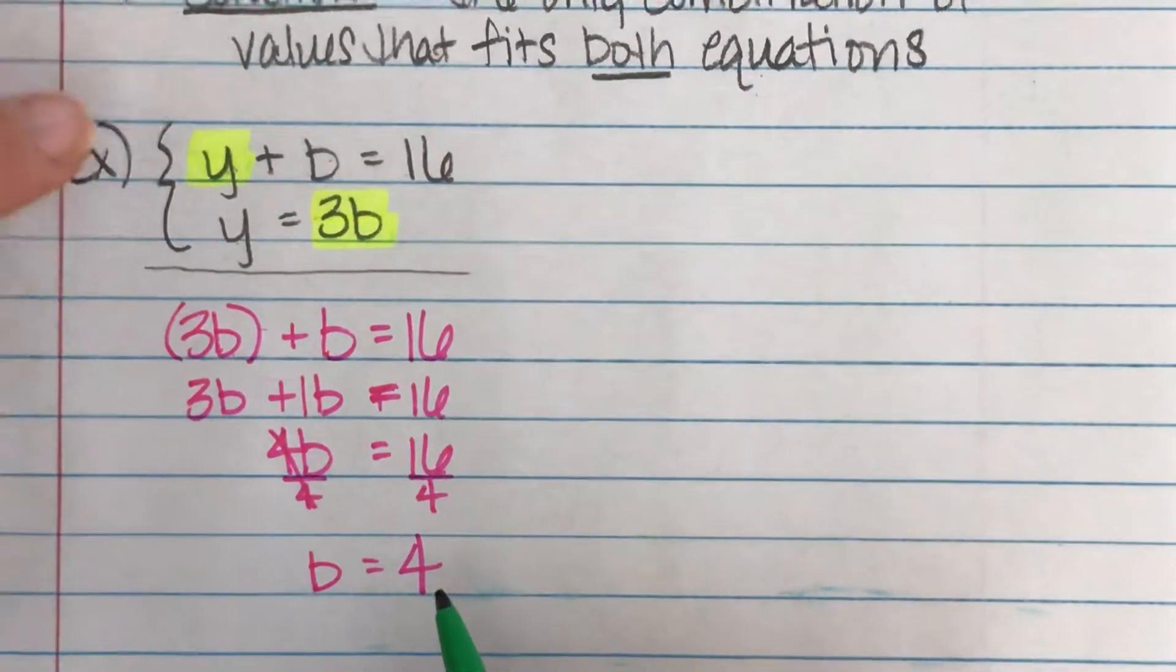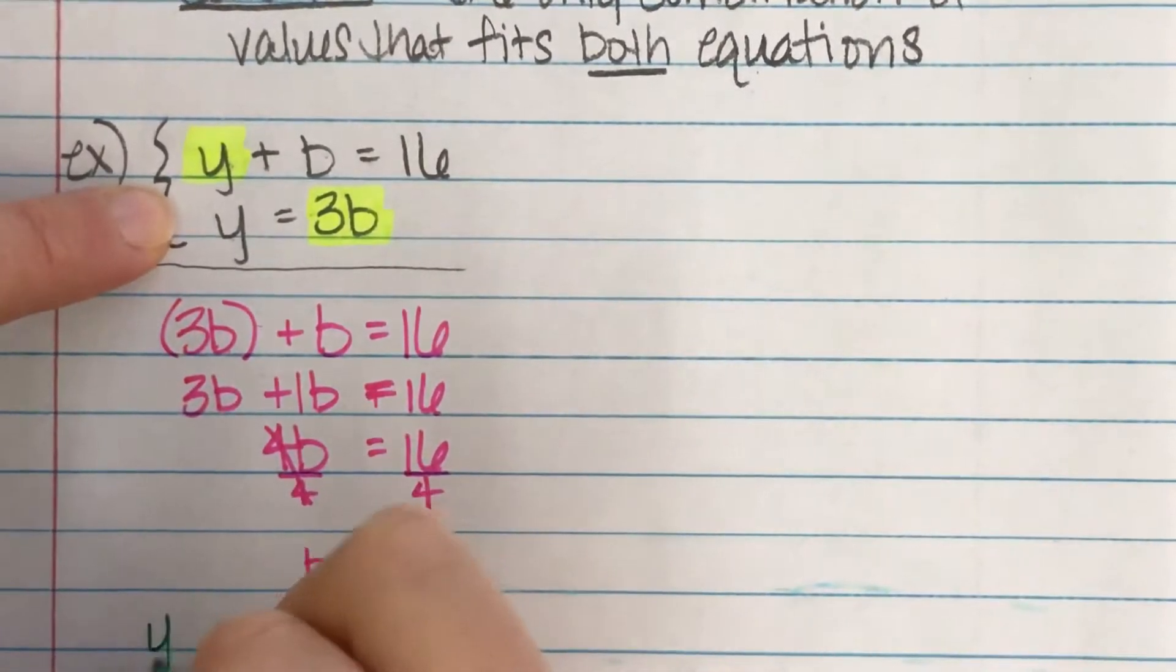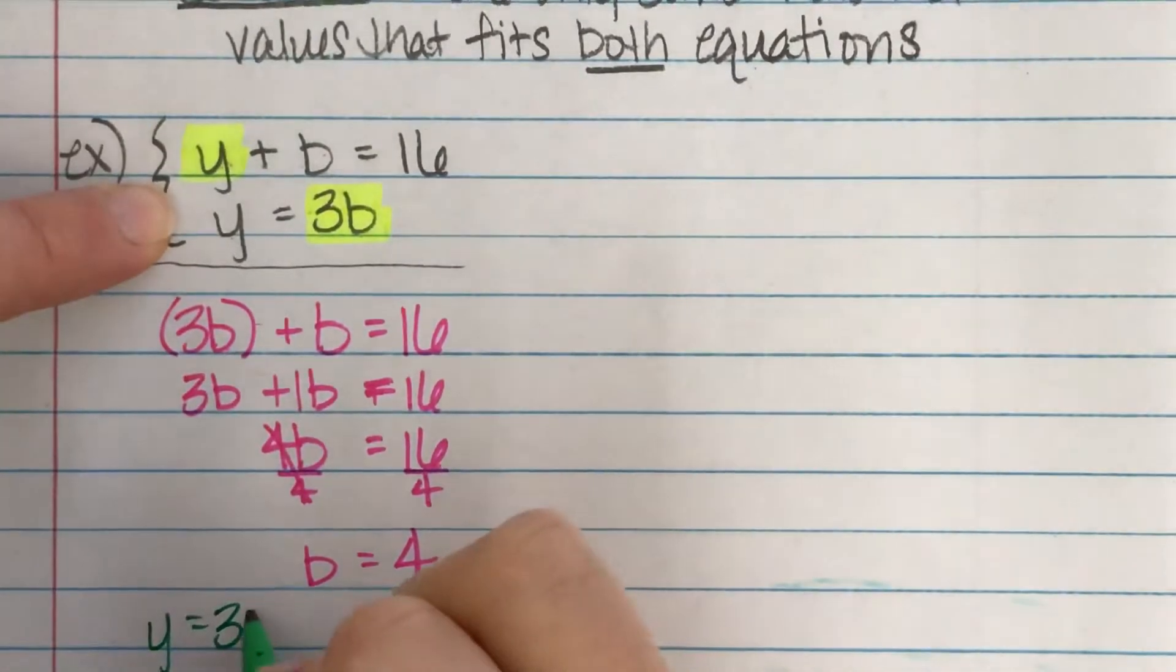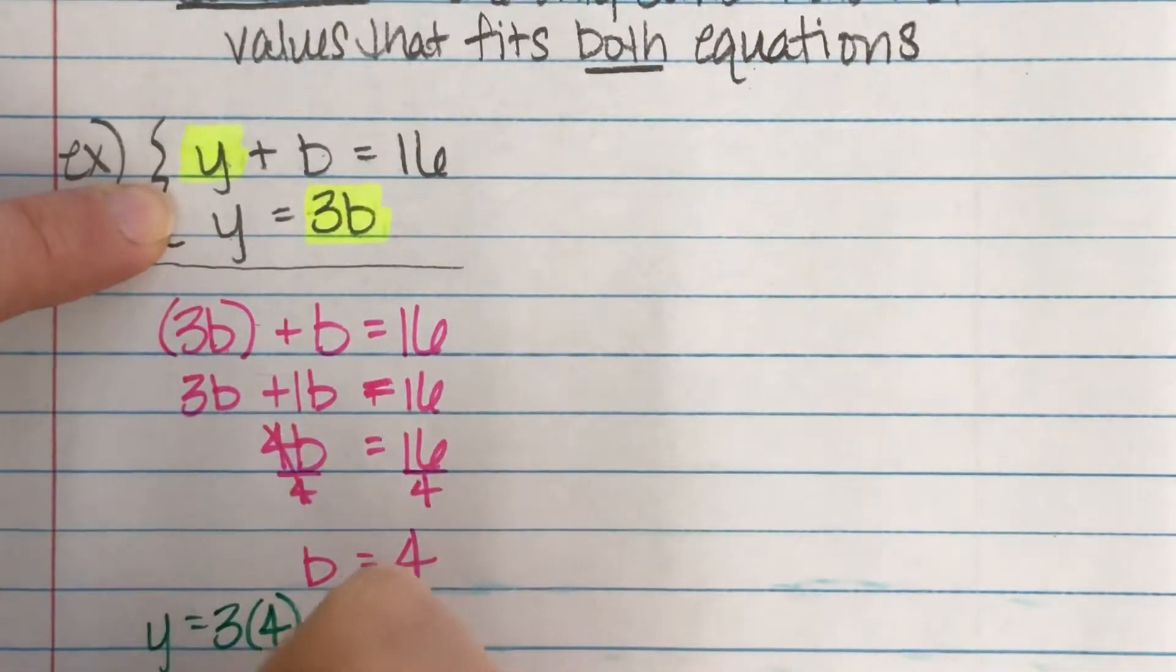Now that I know that b is four, I can go up actually into either one of these problems and I can either say, I know my yellow is three times whatever the blue is. And now I know that blue is four. I can say, well, then the yellow has to be 12.